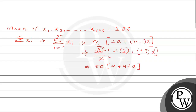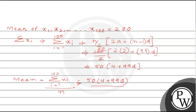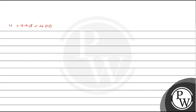Now we calculate the mean using the formula: mean equals sum of all terms divided by n. Substituting, we get 50 times (4 + 99d) divided by 100, and this should equal 200. So 50 cancels with 100 giving 2, and we get 4 + 99d equals 2 times 200, which is 400. Therefore d equals (400 − 4)/99 = 396/99 = 4. So the common difference d equals 4.